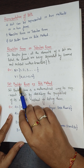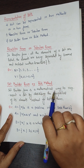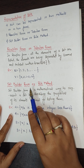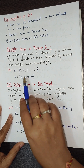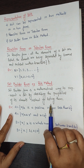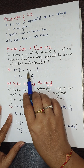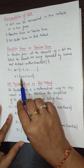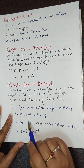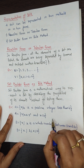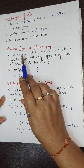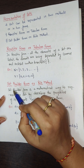The second method is set builder form. Set builder form is a mathematical way to represent a set by describing the properties of its elements instead of listing them. For example, {1, 2, 3, 4, ...} can be described as 'the set of natural numbers'. Writing the property is set builder form; writing elements directly is roster form. Similarly, {a, e, i, o, u} listed directly is roster form, but described as 'vowels of the English alphabet' is set builder form.